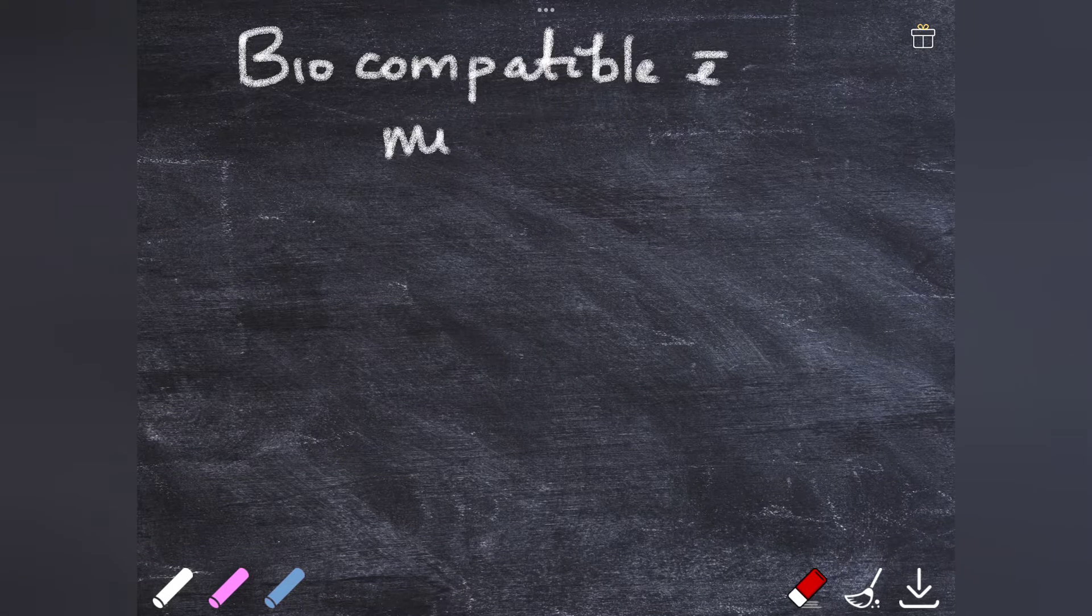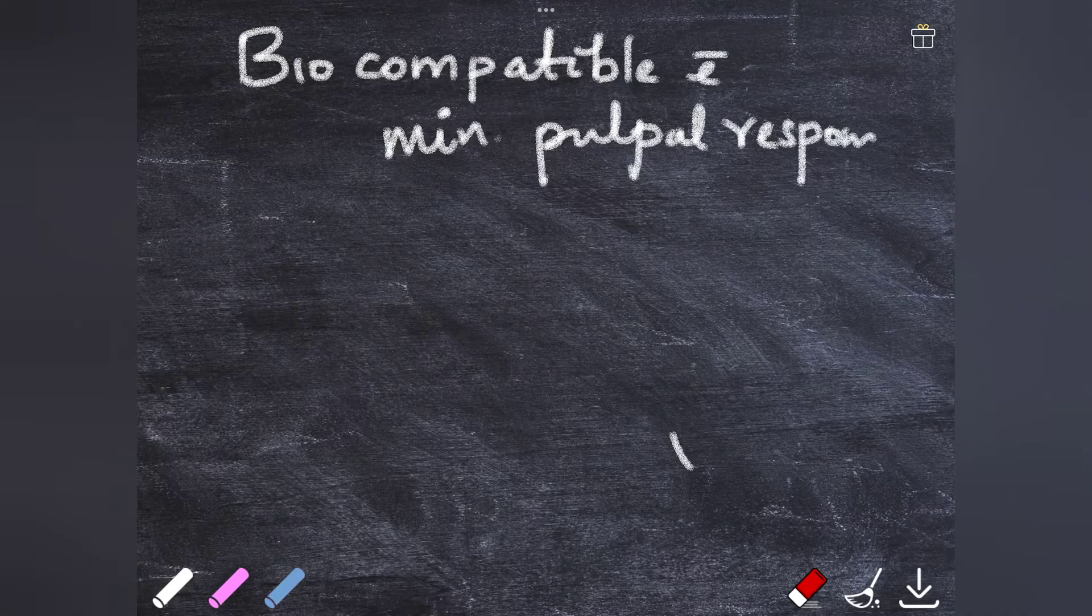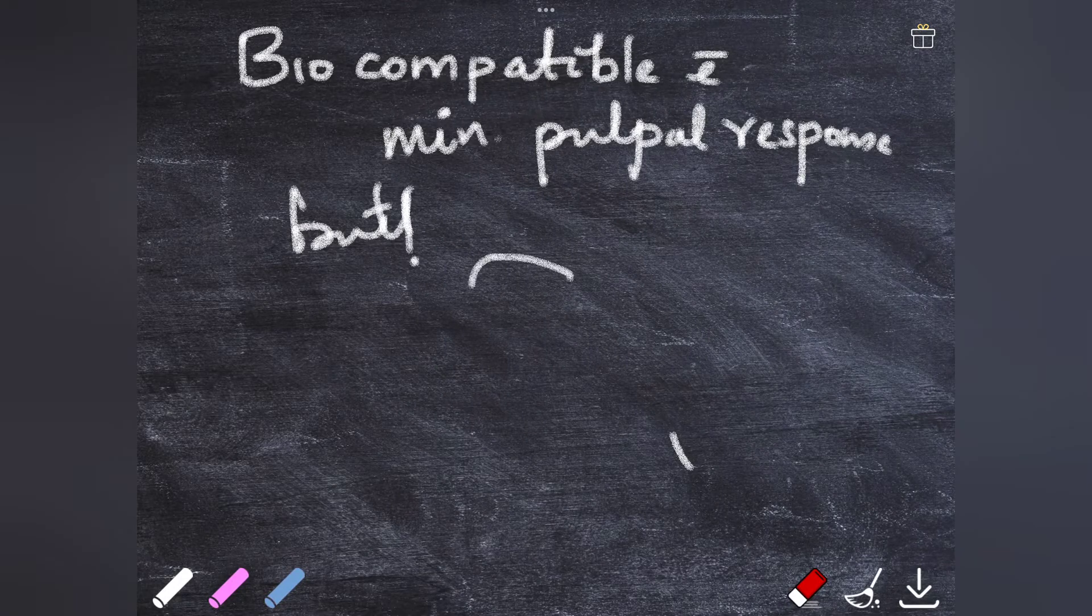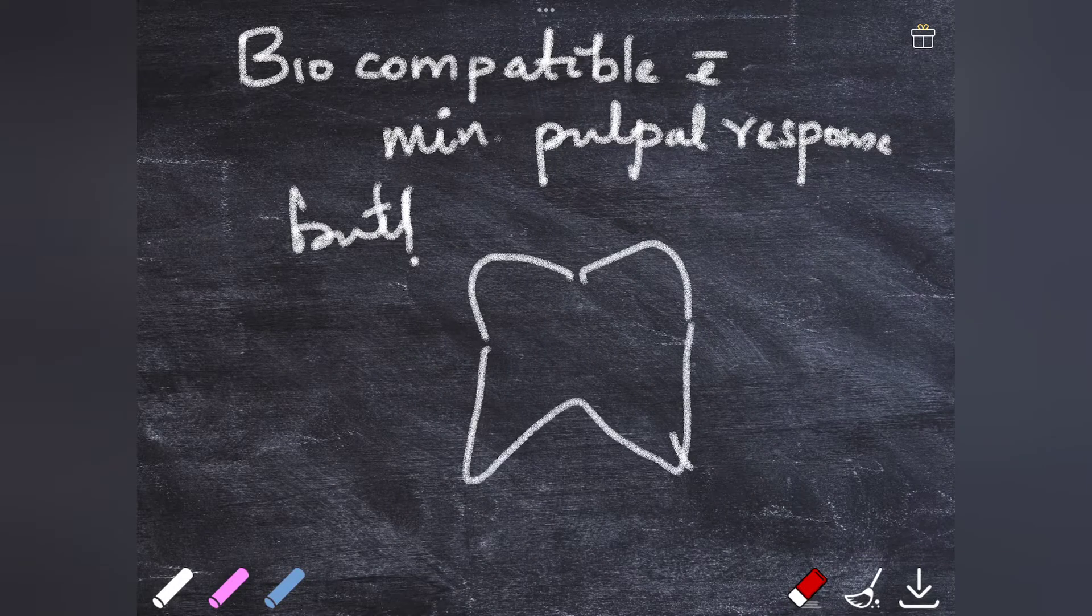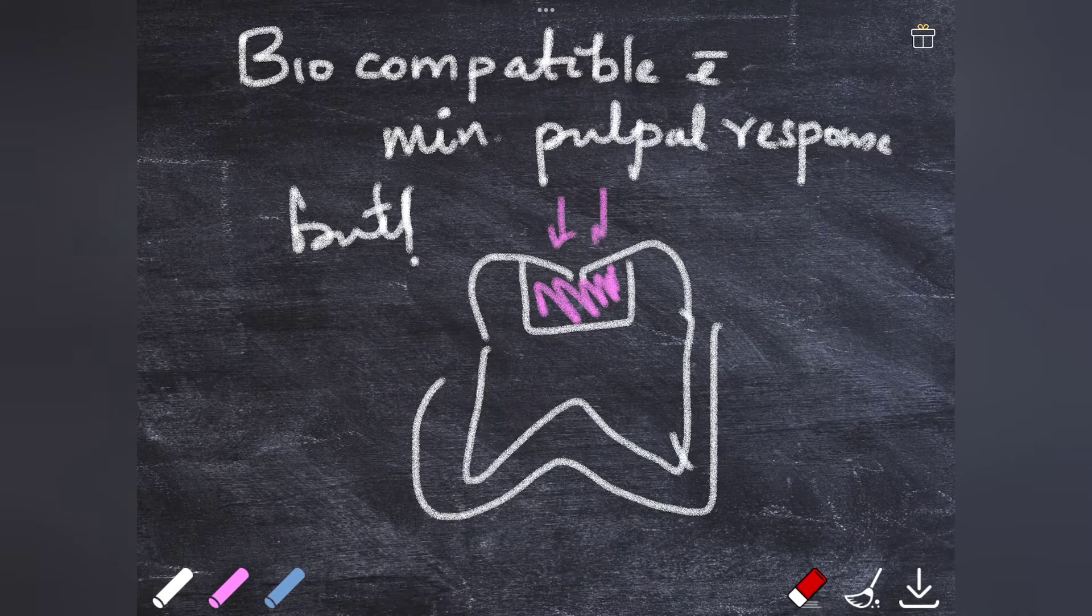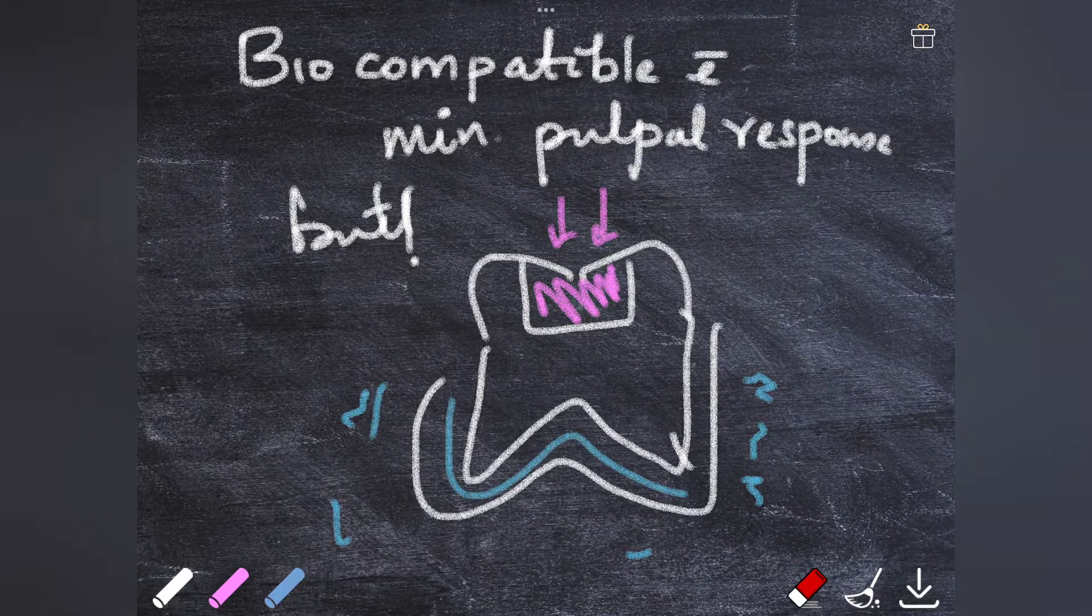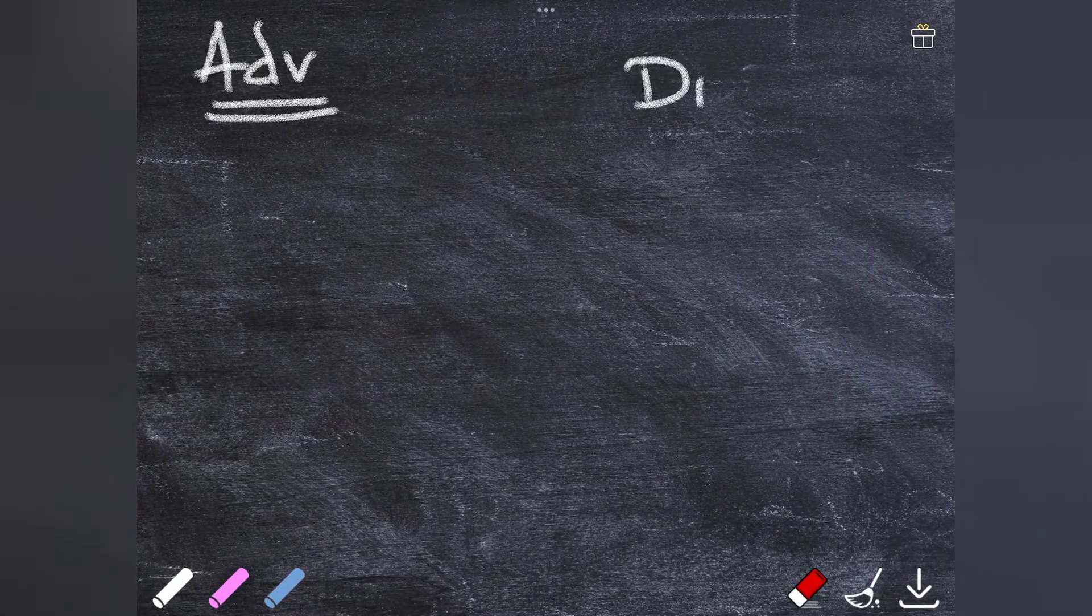If voids are seen at the restoration-tooth interface, it will cause leakage, eventually leading to secondary caries. Another aspect is biocompatibility - they are biocompatible, causing minimum pulpal response. But the problem is that we are actually pushing the material into the tooth, so there is a risk of trauma to both the tooth as well as the supporting tissue when you give the compaction force. There is risk of fracture if it's not done properly.